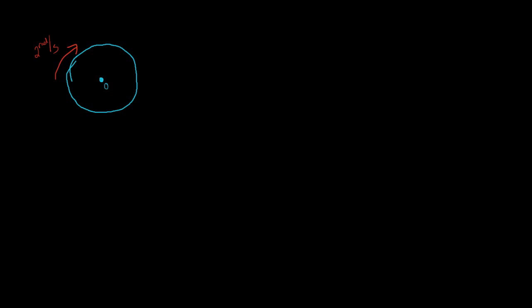We have a rotating disc rotating about point O, clockwise with an angular velocity of 2 radians per second. Its radius is 5 feet. We want to look at two points: point A, which is directly above O at an angle of zero, and point B, which makes an angle of 30 degrees with the horizontal.